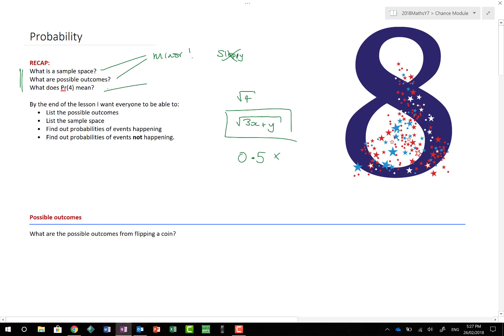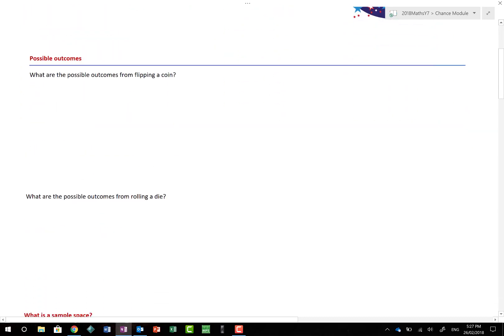We're going to recap in this lesson what the PR of 4 means. By the end of this lesson, hopefully you'll be able to list the possible outcomes, list sample spaces, find out the probability of events happening, and this really important word in probability of events not happening.